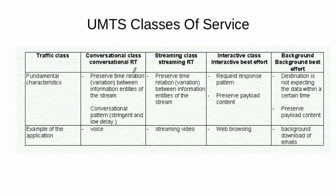We know that we can use different types of voice and data services on a mobile, and these services can be classified into four categories as far as UMTS is concerned. The first class is the conversational class, which refers to voice — whether it is circuit switched voice or packet switched voice. For example, using Skype is an example of packet switched voice.